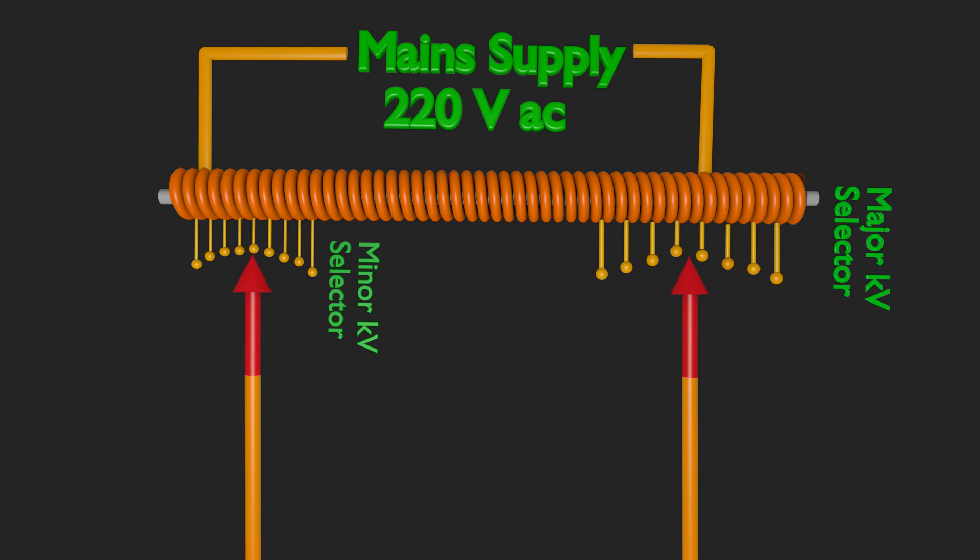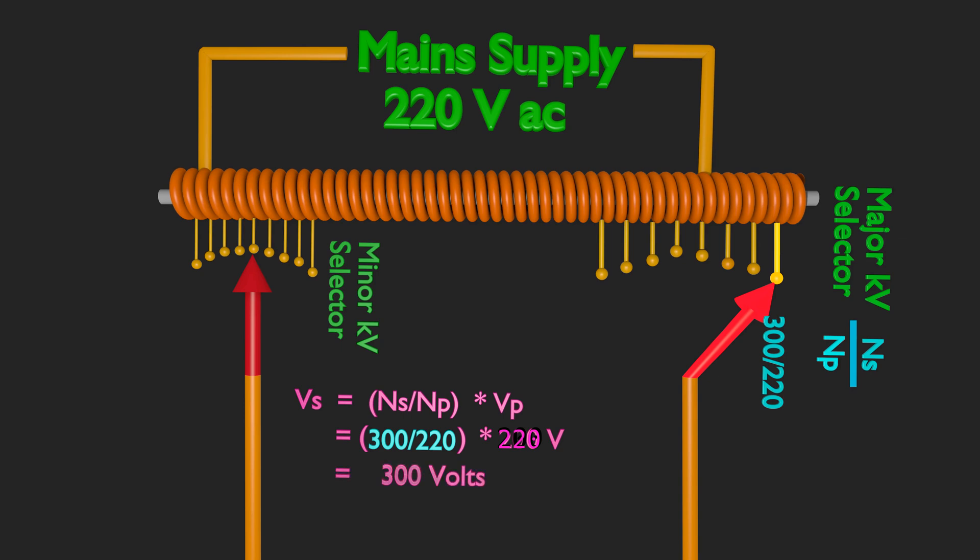Let's consider when first tapping of major selector is tapped. Number of turns in secondary divided by number of turns in primary. For first taping, turn ratio be 300 by 220. Voltage across secondary of a transformer, as per transformer law is ratio of turns in secondary to primary multiplied by voltage across primary. Primary voltage applied is 220 volts. On multiplication we get 300 volts.